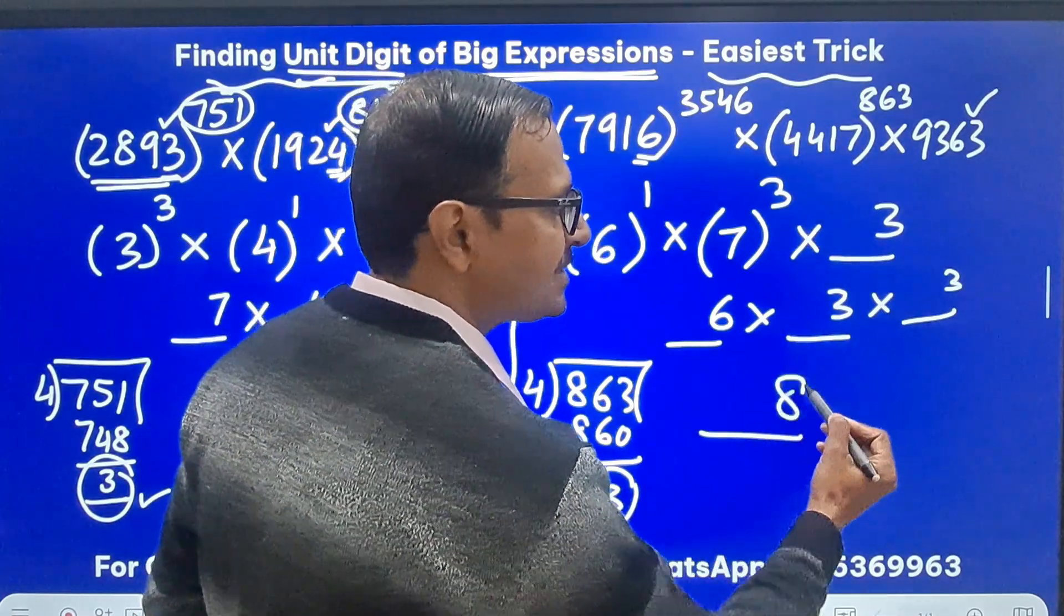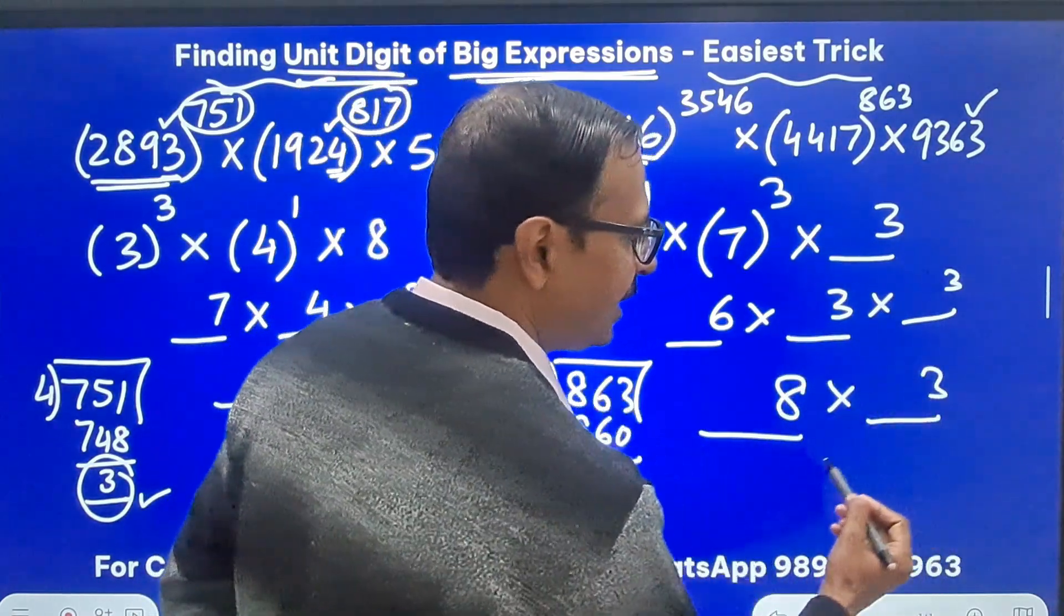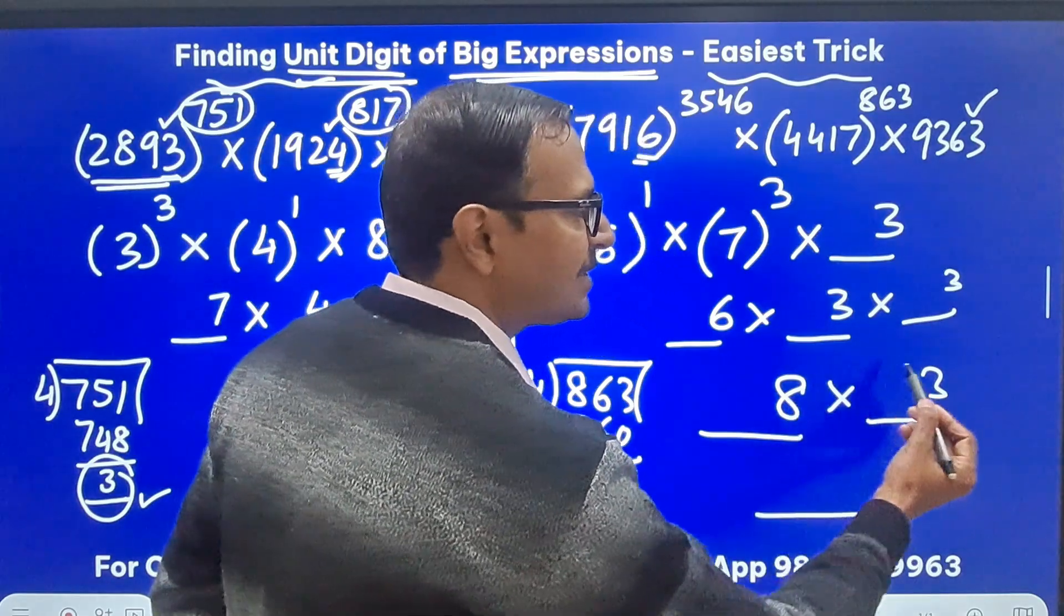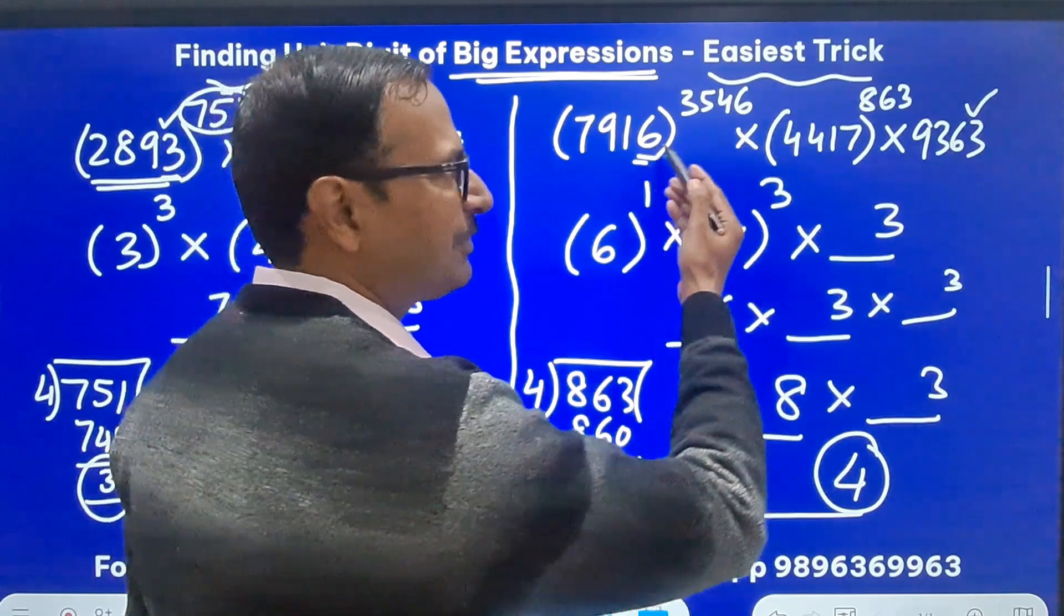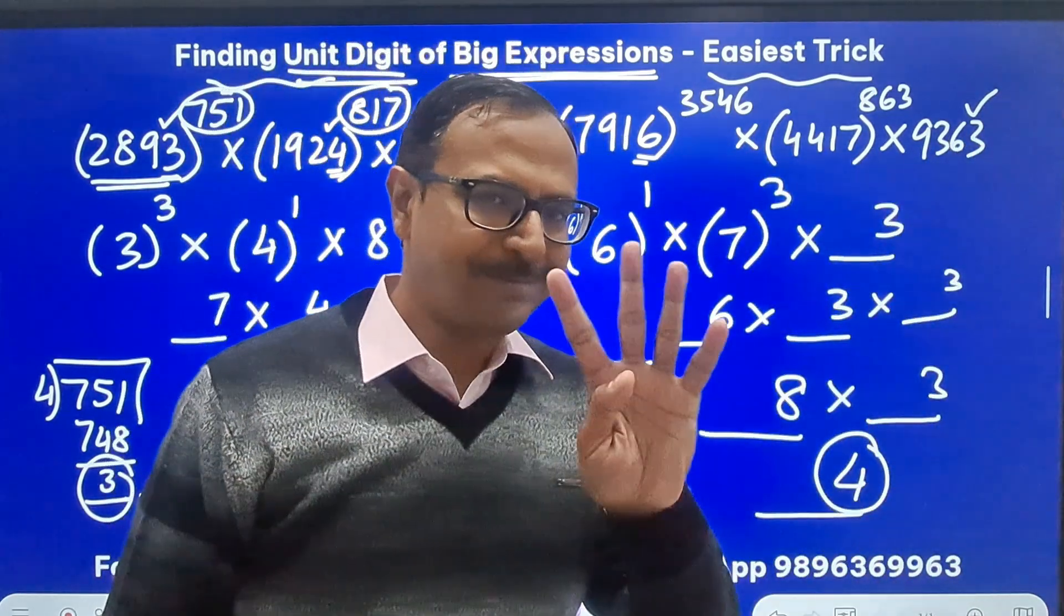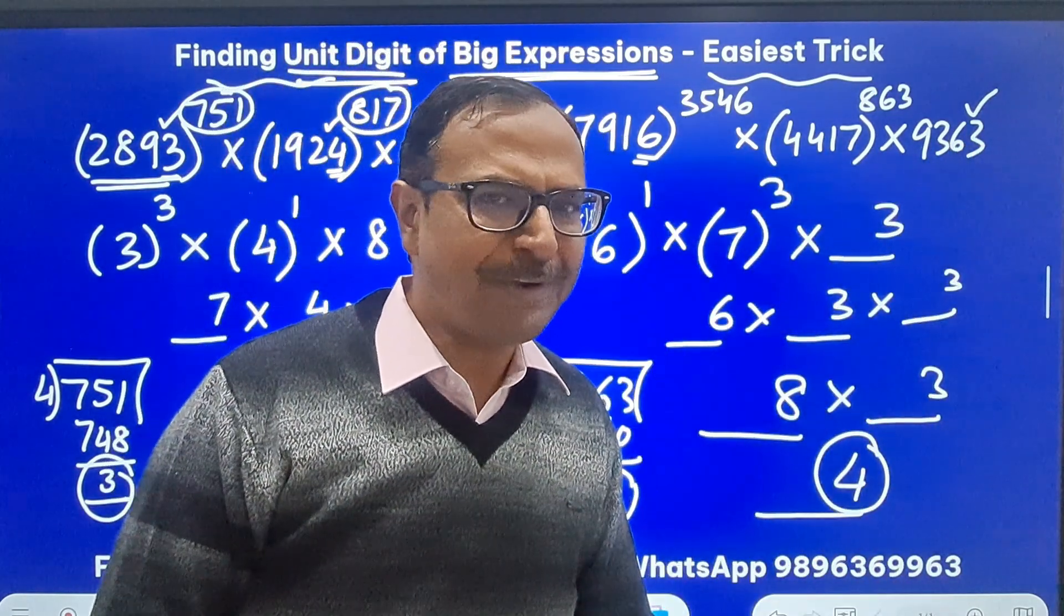Now 6 times 3 is 18 ends in 8 and another 3 and so your answer will be 8 times 3 is 24 ends in 4. So the unit digit of this expression is 4. Not difficult right?